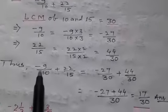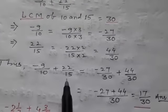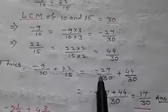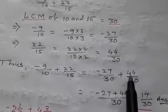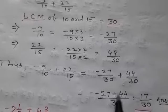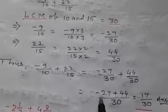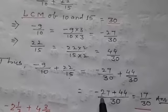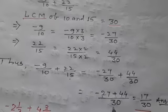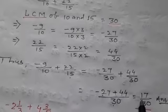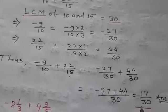Thus, −9/10 + 22/15 = −27/30 + 44/30 = (−27 + 44)/30 = 17/30.